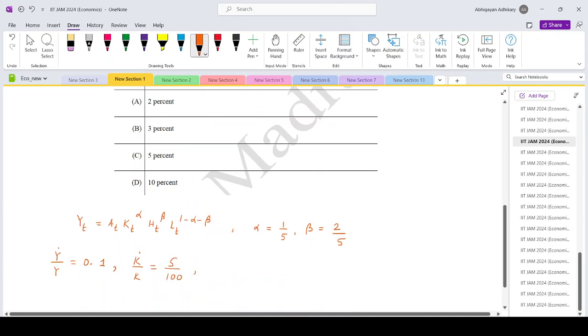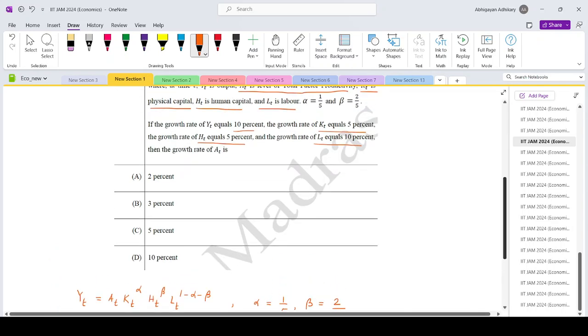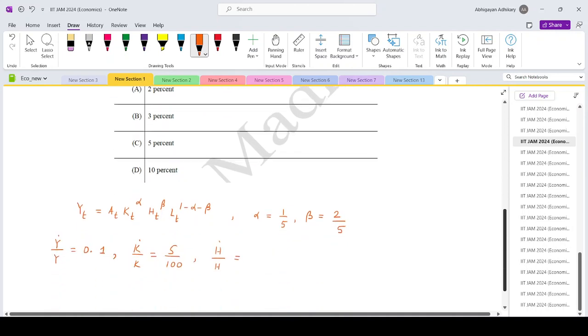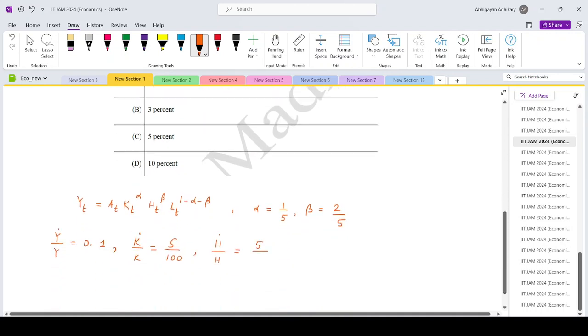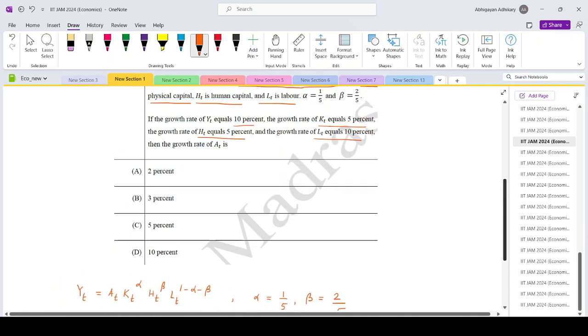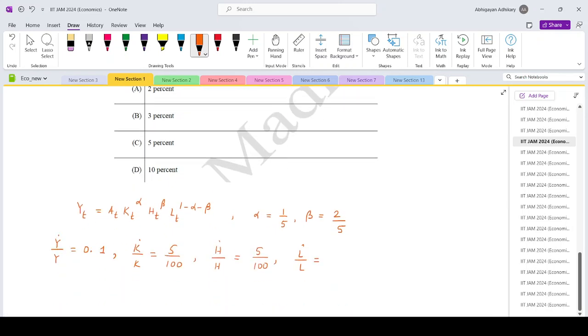We have the growth rate of human capital, h dot by h, which is again 5%, which is 5 by 100. And we have the growth rate of labor, l dot by l, that is given to be 10%, so that is 10 by 100.